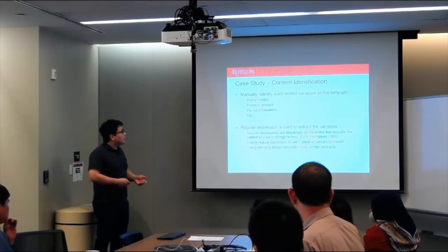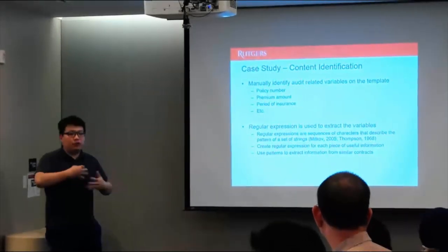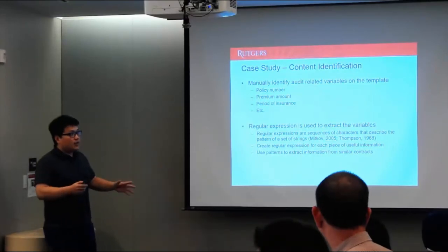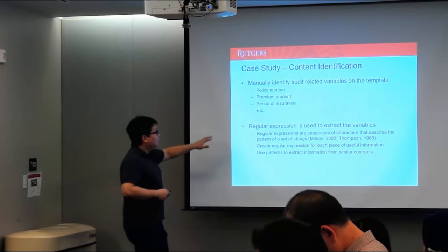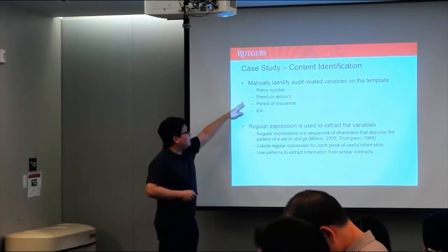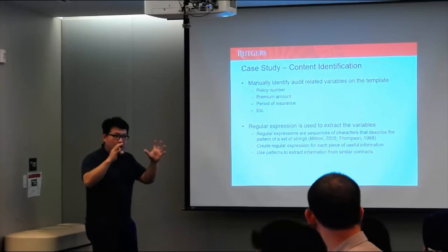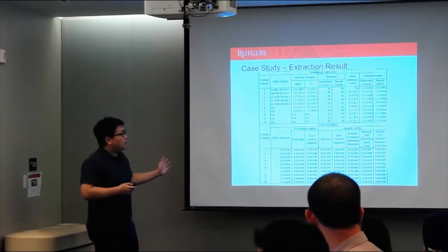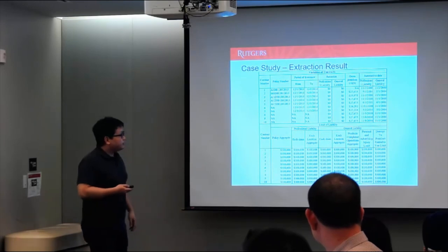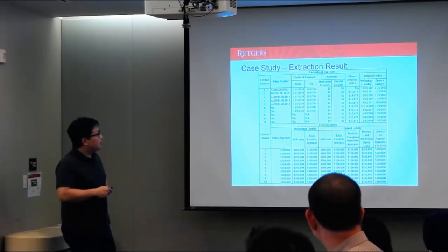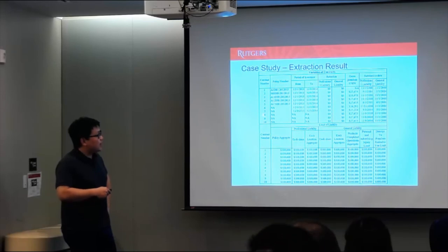And then, the second step is content identification. Because we only have 10 here, so we modify the approach a little bit to use regular expression. So, the first step is to tell the auditors to look at, read our contracts to see what variable they are interested in. So here we name a few of them, policy number, premium amount, period of interest, et cetera. And then, identify the right regular expression to match the pattern of the variable. And with that done, we just run the regular expression, we can extract the record.